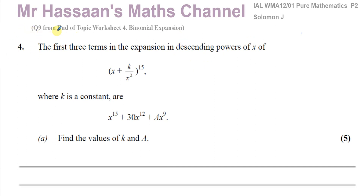It corresponds to question number nine from my end-of-topic worksheet on P2 topics - a binomial expansion topic, of course. The question tells us the first three terms in the expansion in descending powers of x of (x + k/x²) to the power of 15, where k is a constant, are x^15 + 30x^12 + ax^9. Find the values of k and a.